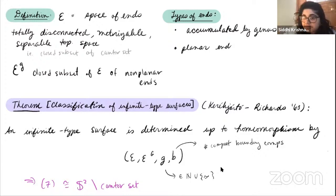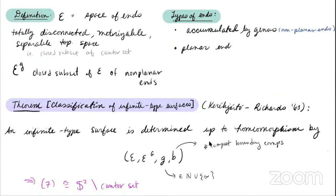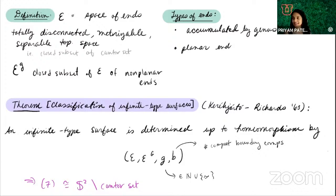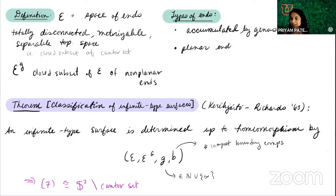Another question: if two surfaces are both a sphere minus a Cantor set, are they necessarily homeomorphic? Yes, they are necessarily homeomorphic — because all Cantor sets are homeomorphic to each other, so a sphere minus any Cantor set gives you the same surface up to homeomorphism. We're talking purely about homeomorphism type, not any geometric structure. So if you take a different tree, it's still a Cantor set's worth of ends, and they all have the same end space.